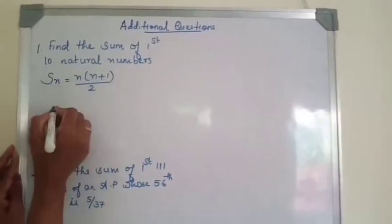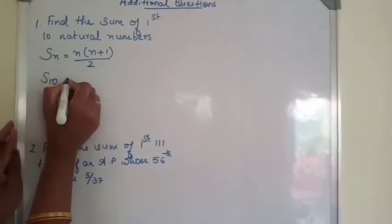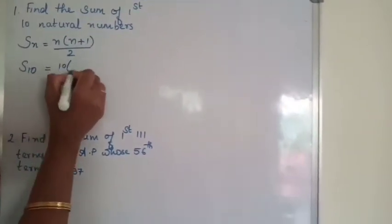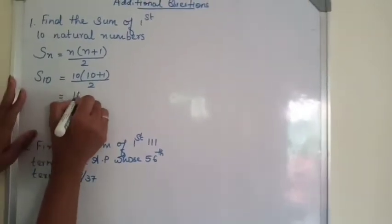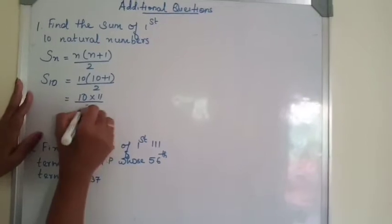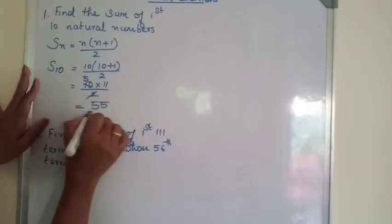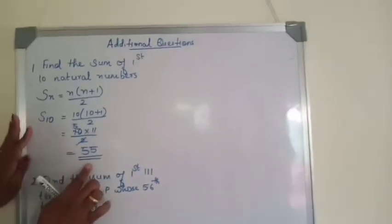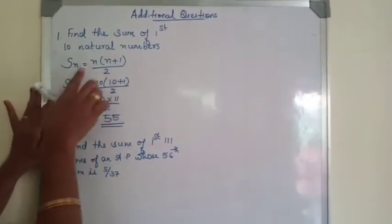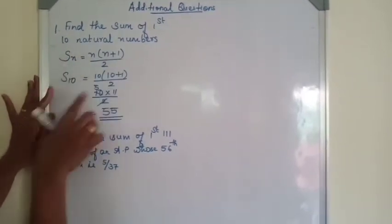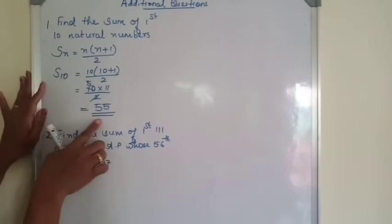There are 10 natural numbers, so we are finding the sum of 10 natural numbers. S₁₀ = 10 × (10+1)/2 = 10 × 11/2 = 55. So the sum of first 10 natural numbers is 55. Whenever we want to find the sum of first N continuous natural numbers, we use the formula Sₙ = N(N+1)/2.